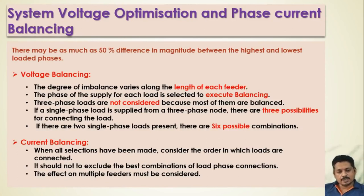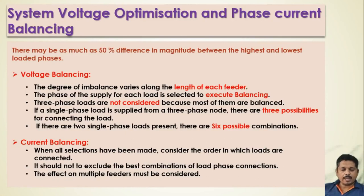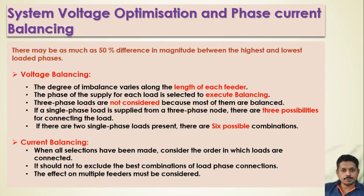If we have one single-phase load, we have three options to connect it: R, Y, or B phase. We select the appropriate phase based on load demand and phase availability. If we have two single-phase loads, we have six different configuration options — such as RY, YB, RB, and so on — to connect the loads and achieve voltage balancing. For current balancing, we follow the same steps of appropriate phase selection and connection configuration.